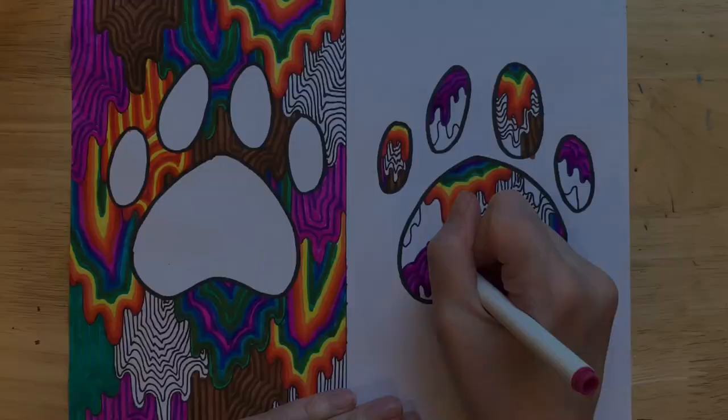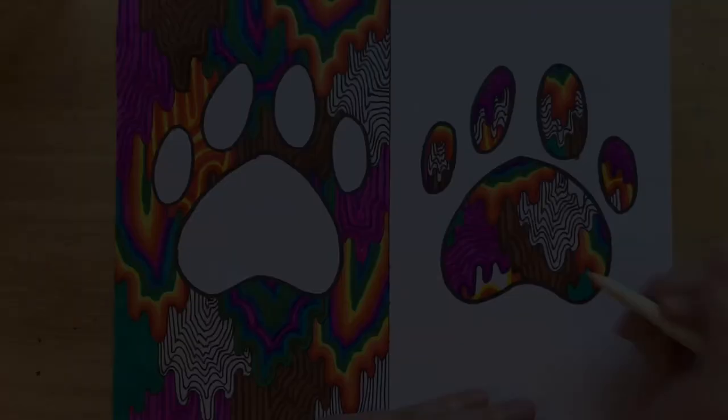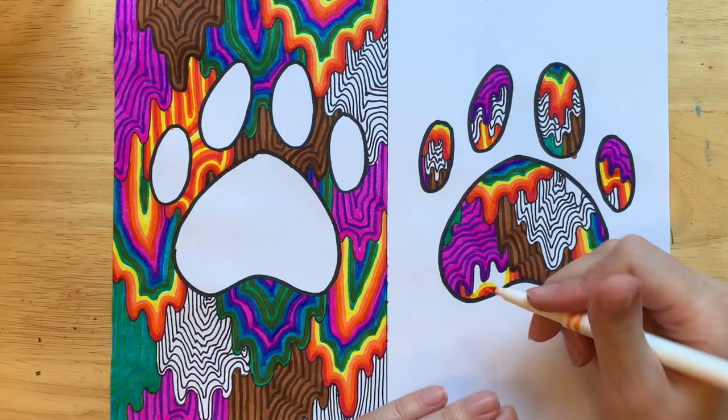Once you have finished your artwork, please take a photo and publish to Artsonia under Jen Stark Drip Art. Then, within Google Classroom, mark the assignment as turned in.